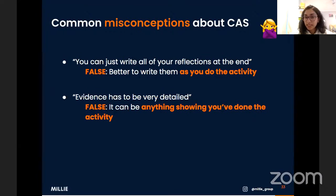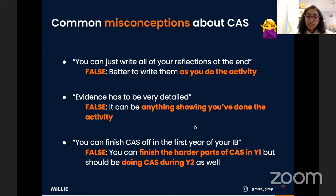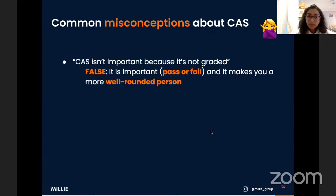Second misconception: evidence has to be really detailed — this is wrong. Evidence is the easiest part of CAS; it can be anything showing you've done the activity, like a photo of you doing it. Third misconception: you can finish CAS entirely in the first year — also false. CAS is an ongoing process. However, you can front-load the harder parts in year one to make year two less stressful. Fourth misconception: CAS isn't important because it's not graded — also wrong. It's a pass or fail system and you need to pass it to pass your IB.